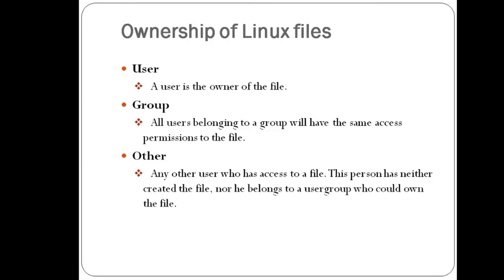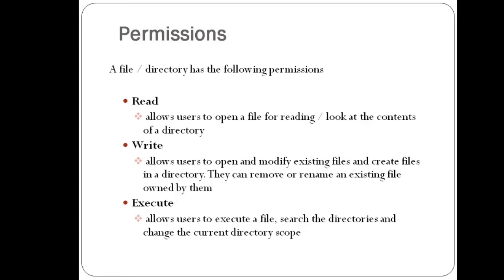And 'other' refers to all other people — any user who has access to a file who has neither created the file nor belongs to the user group that owns the file. It means you are giving access to all the people in the world. Next is the permission. A file or directory can have three types of permission: read permission, write permission, and execute permission.